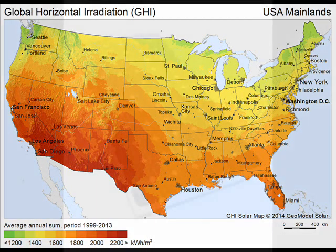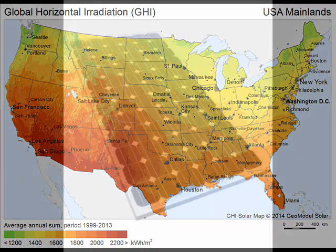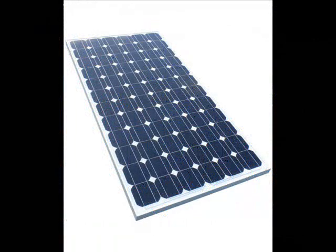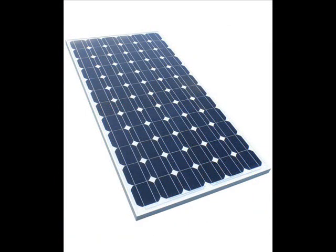Under ideal conditions, a 200-watt photovoltaic panel should supply 200 watts of power. If the surface area of the panel is 1 meter squared and the radiant power available is 1 kilowatt per square meter, the efficiency of the panel would be 20%.